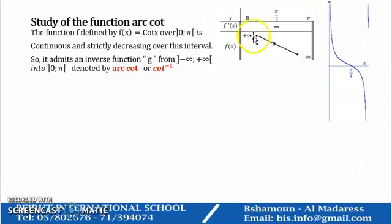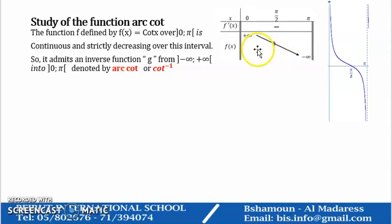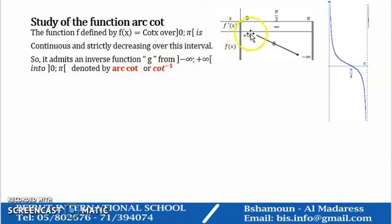Now, over the interval (0, π), this is the domain of definition of f. Here, f is continuous and strictly decreasing, so we can deduce that f has an inverse function g, which is denoted arc cotangent, or arc cotangent⁻¹. The domain of definition of g will be from minus infinity to plus infinity.